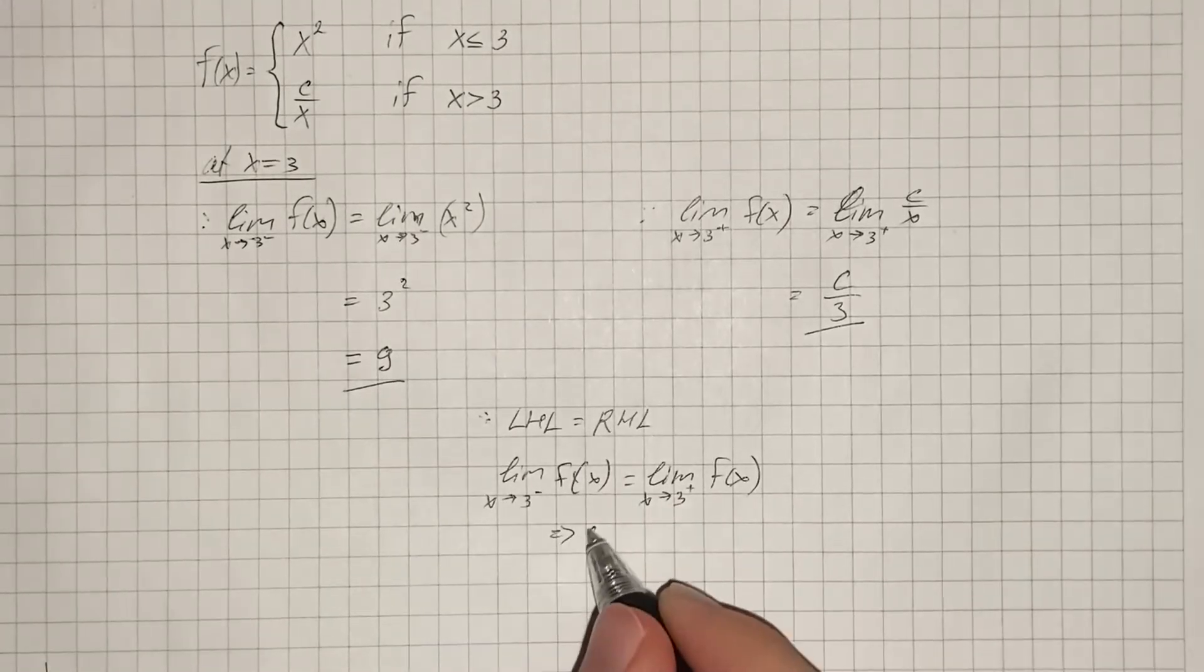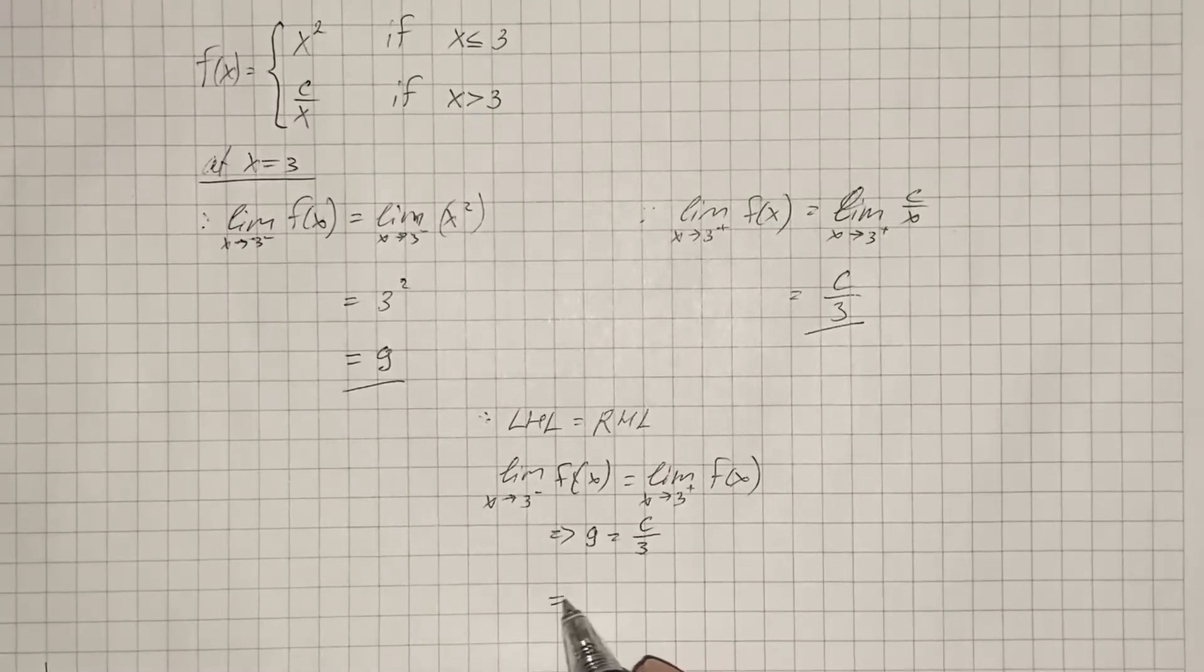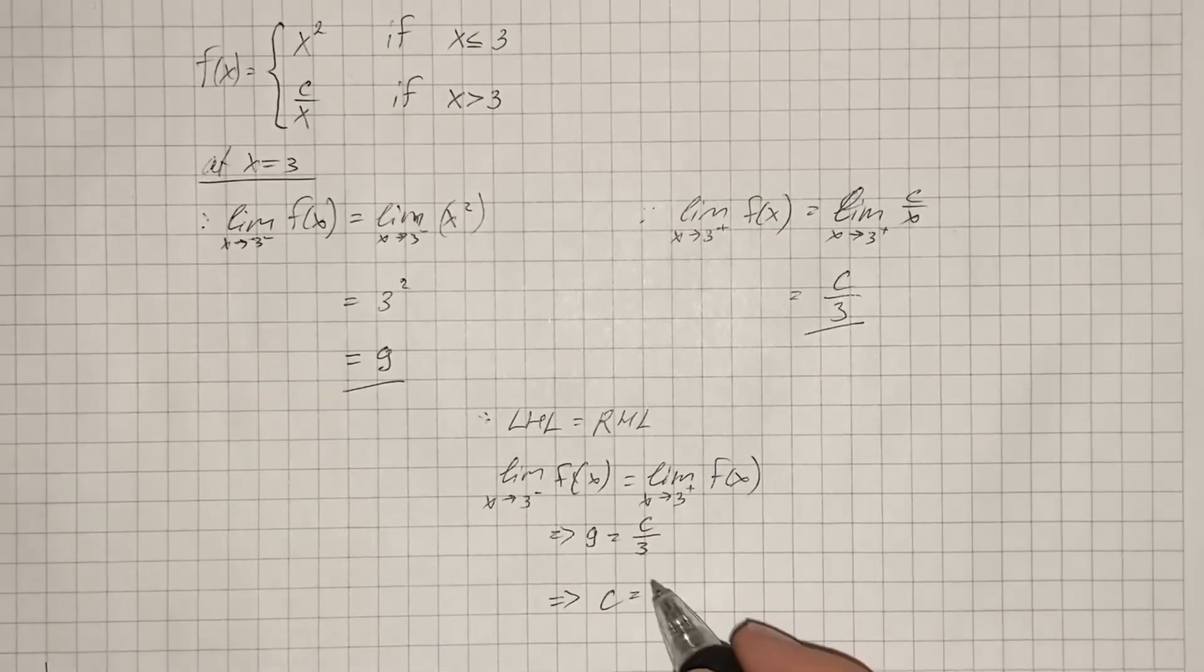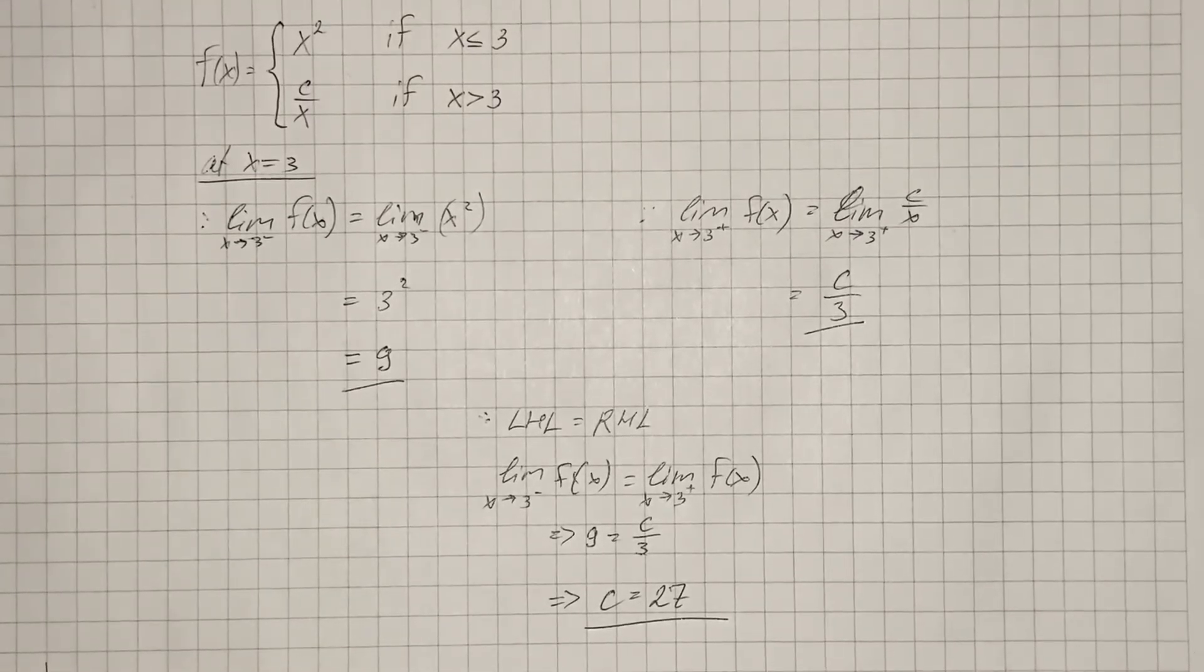Therefore, 9 equals 3c, and now we can find c, which is equal to 27. So that's our answer.